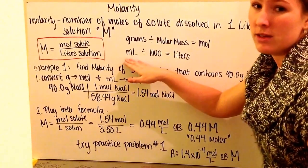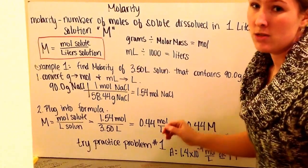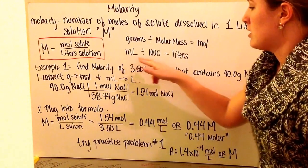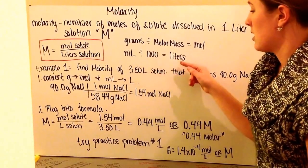If we're given milliliters, we know there's 1,000 milliliters in a liter. So we take our milliliters and divide by 1,000 to get our number of liters.